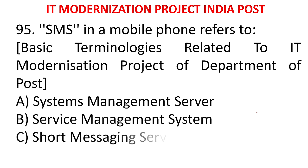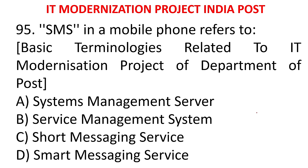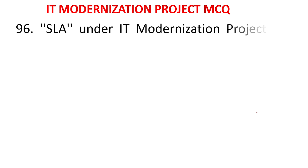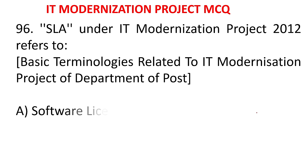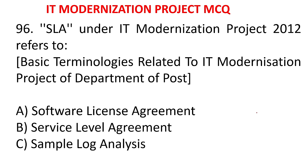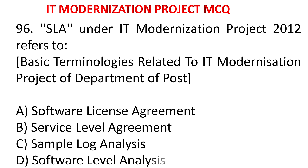MCQ 91: SMS in mobile phone refers to - A) Systems Management Server, B) Service Management System, C) Short Messaging System, D) Smart Messaging System. The answer is Short Messaging Service. SMS means Short Messaging Service - we regularly send SMS.